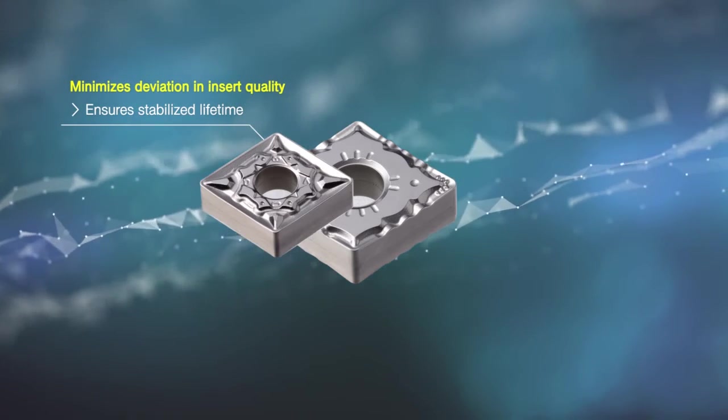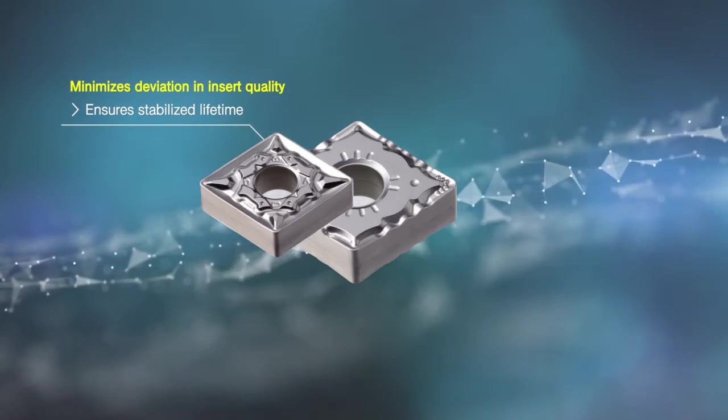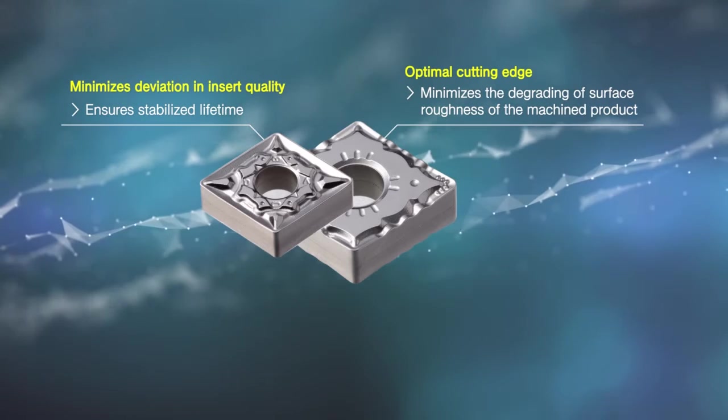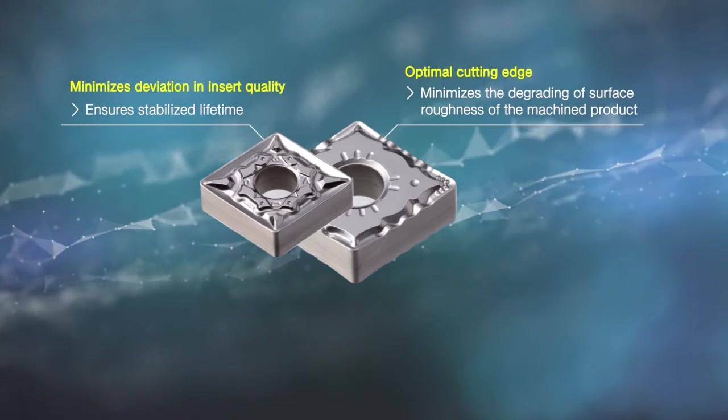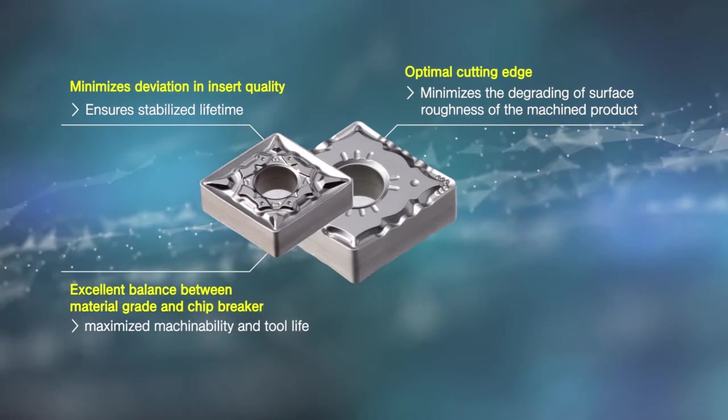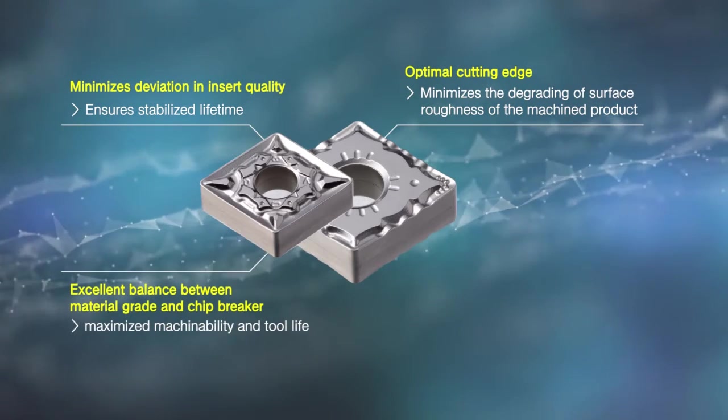An optimal cutting edge minimizes the surface roughness of the workpiece. The balance of the material and the chip breaker maximize machinability and tool life while providing a wide range of applications to parts of various materials in ferrous and semi-ferrous compositions.